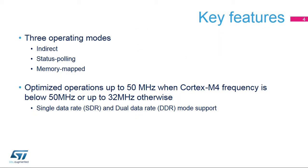The Quad SPI Memory Interface, integrated inside STM32 products, offers three operating modes and is optimized for communication with external memories with support for both single and dual data rate operation, allowing the access of 8 bits in a single read cycle in DDR mode. When the Cortex-M4 frequency is below 50 MHz, the Quad SPI block can use the same clock frequency for the bus.